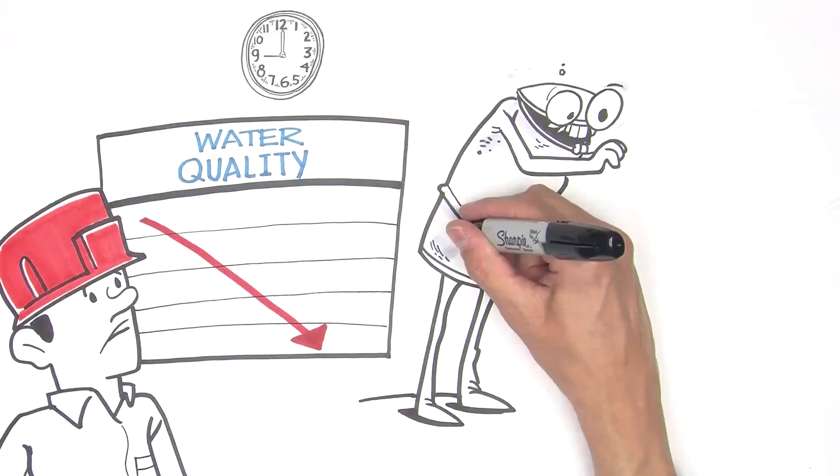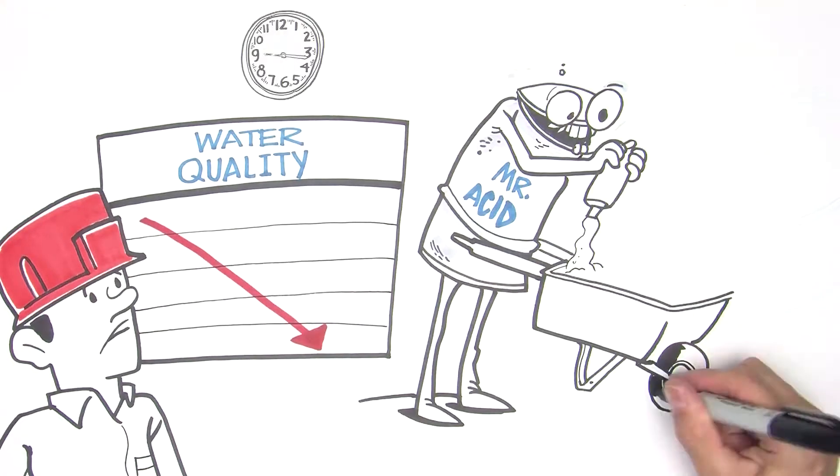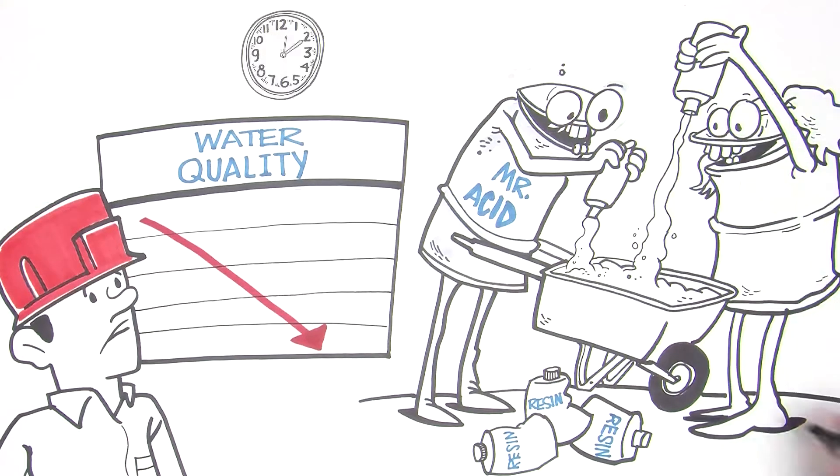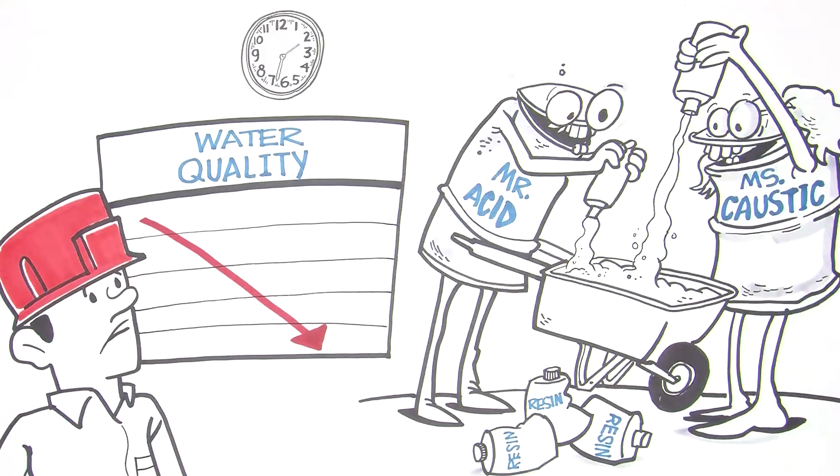So quality begins high and declines, requiring downtime and laborers or service providers to exchange spent resin with fresh resin, or to regenerate the resin using hazardous chemicals on site or at a regeneration facility.